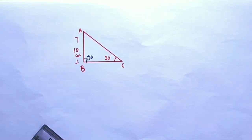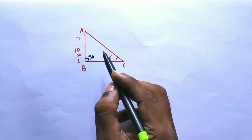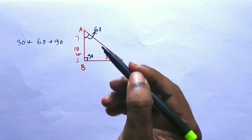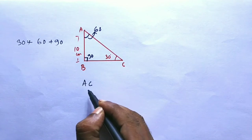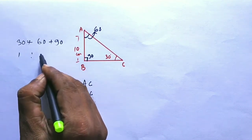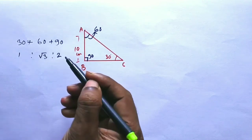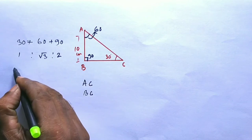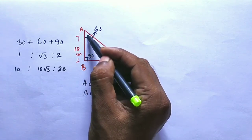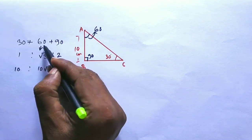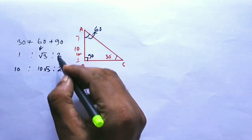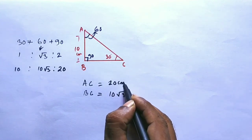Let us cite an example. In a right triangle ABC, angle B = 90° and angle C = 30°, so angle A must be 60°. We have to find AC and BC. We have the side ratio as 1 : √3 : 2, where 1 is opposite 30°, √3 is opposite 60°, and 2 is opposite 90°. Opposite to C (30°) is 10, so we write 1 → 10, √3 → 10√3. BC opposite to 60° is 10√3, and AC opposite to 90° is 20 centimeters.